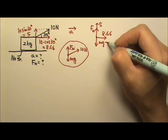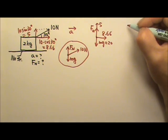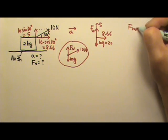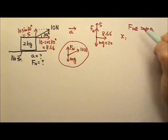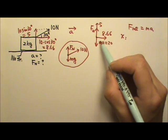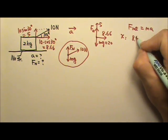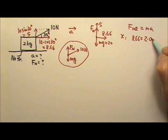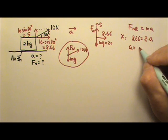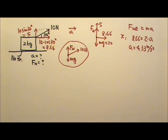Now of course MG is 20 because it's 2 kilograms. Then I can write net force equals MA. I'm going to start with the x direction. For the horizontal direction, the net force is 8.66, and that equals to M — 2 kilograms — times A. So the acceleration is 4.33 meters per second squared, and the acceleration goes to the right.